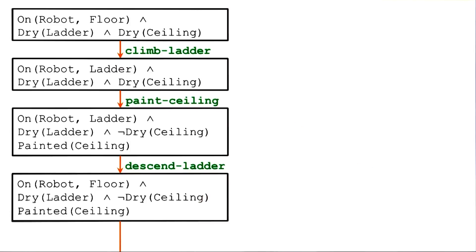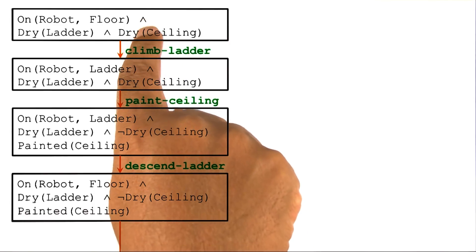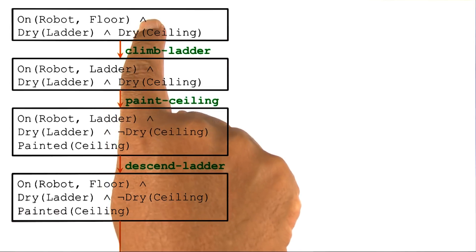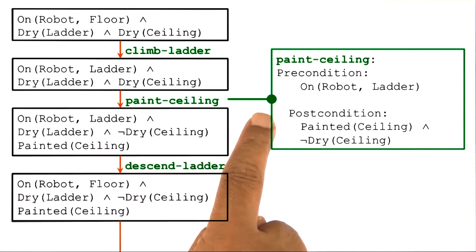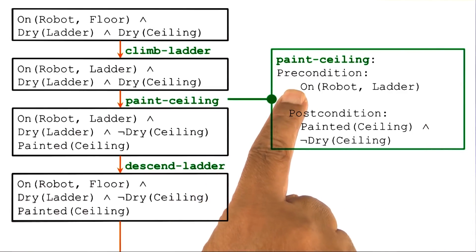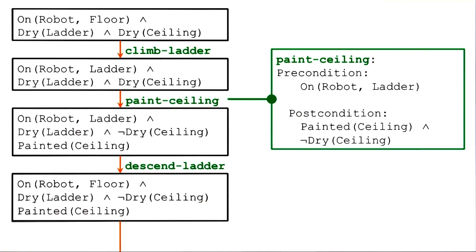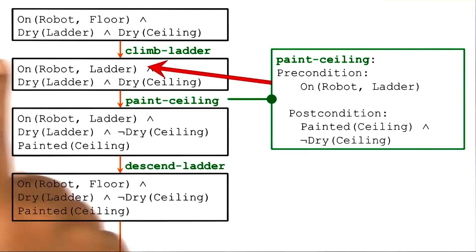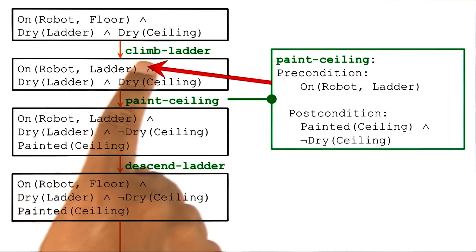A plan might look like this. Here is the initial state and a set of successor states. A series of states punctuated by the operators that transform one state into another. Here we have expanded this operator paint-ceiling on the right to specify its preconditions and postconditions. And there are several things noteworthy here.